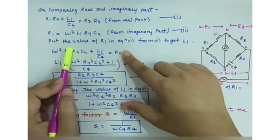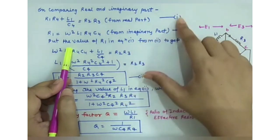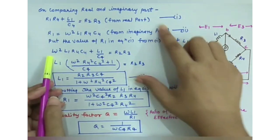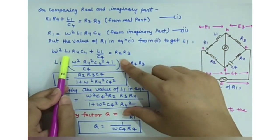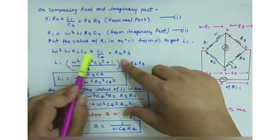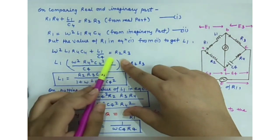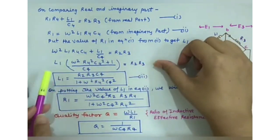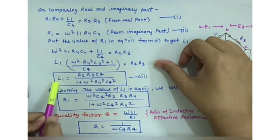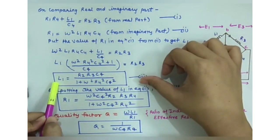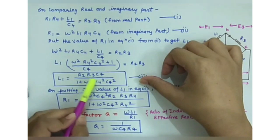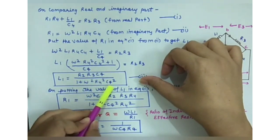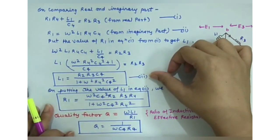Substituting the value of R1 from equation 2 into equation 1, we get: ω²L1·R4·C4 + L1/C4 = R2·R3. Solving for L1, we obtain equation 3: L1 = R2·R3·C4 / (1 + ω²R4²C4²).